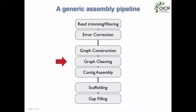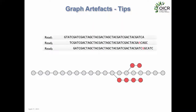Once the graph is constructed, we perform cleanup. Residual sequencing errors and heterozygosity in diploid genomes cause artifacts we need to remove. First are tips — short dead-end structures caused by sequencing errors. Here's a graph built from three reads where two have sequencing errors near their ends, causing these little structures that go nowhere and cause branches without contributing new sequence. We design algorithms to find these tips and remove them, making it easier to find the true path.